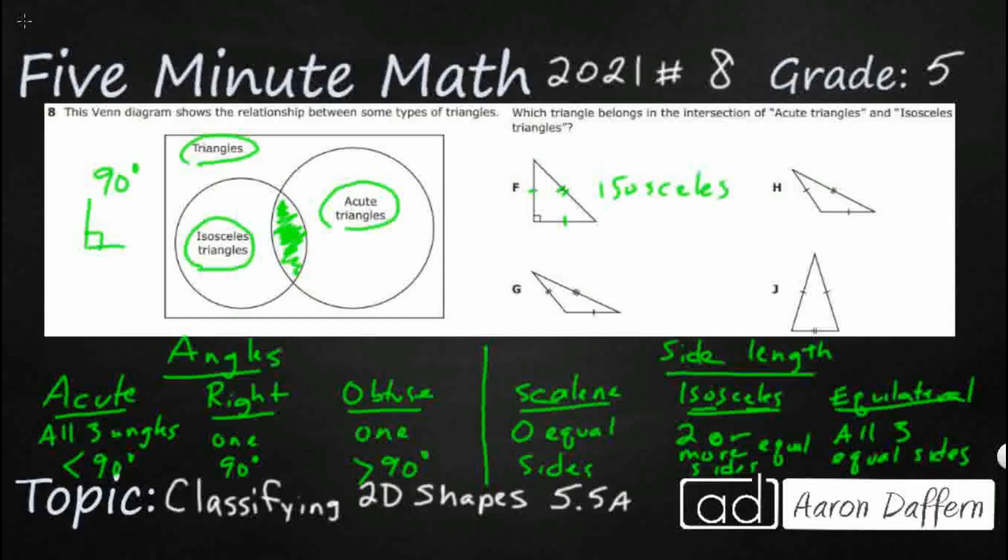If we're looking at our angles, we see we've got a square corner right there. So this is a right. So this is a right isosceles triangle. We're looking for an acute isosceles triangle. So that's not it right there.